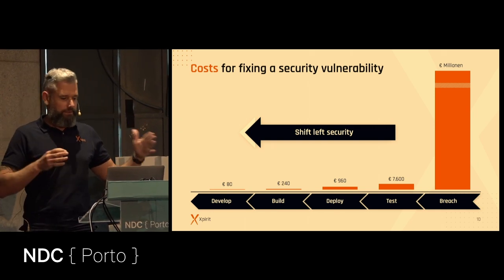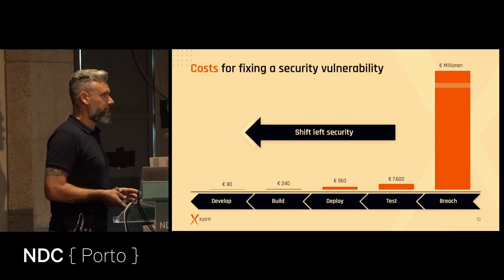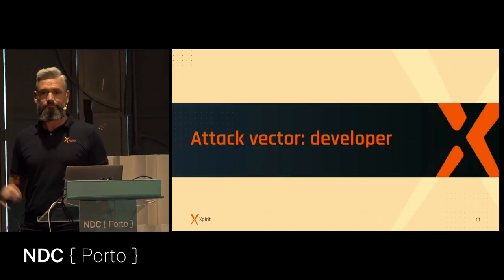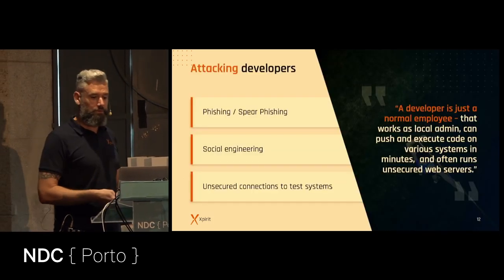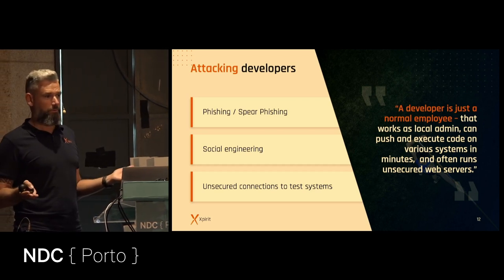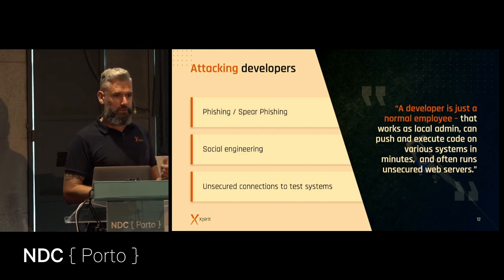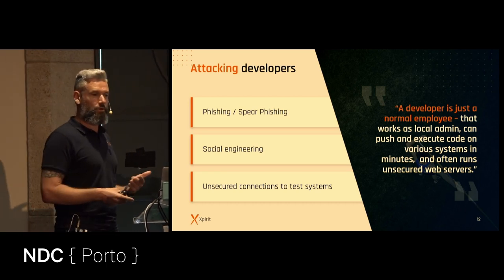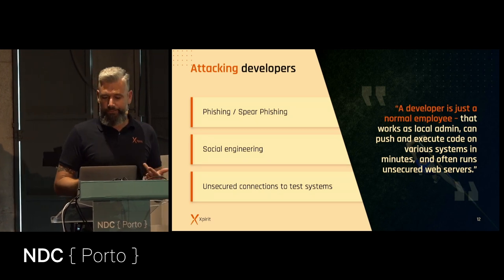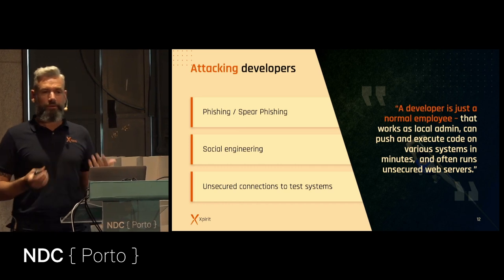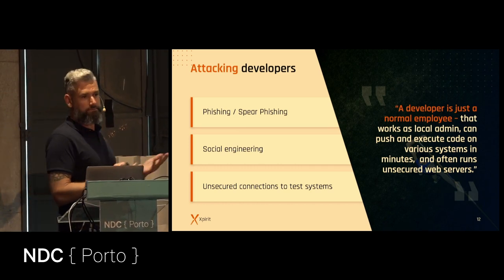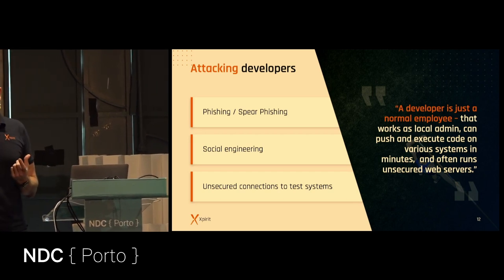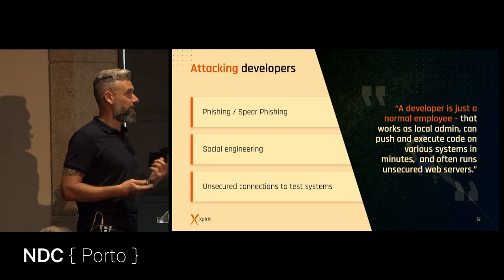I want to go through all the attack vectors in such a software supply chain or development chain. The first attack vector is you — the developer. The developer is a really good attack vector, because probably you think, 'Hey, what can go wrong? I'm just a developer, I'm just a normal employee.' But normally you have admin rights to a lot of systems, admin rights to a very powerful local machine, with a ton of tools installed that really help if an attacker is already there. You can modify code and execute scripts during the pipeline. A developer is basically almost as good as an administrator.